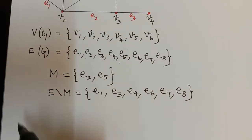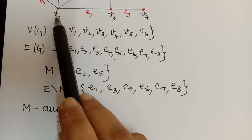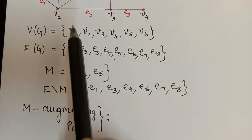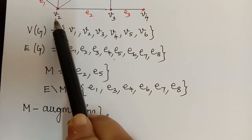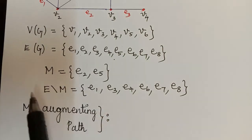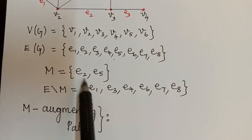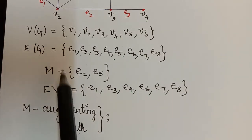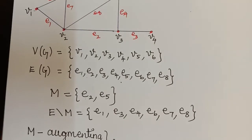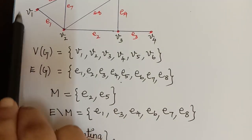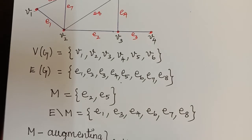Now we will write the M augmenting path. If we start with vertex V2, since E2 is incident with V2, V2 would be matched under M. But by the definition of augmenting path, the origin should not be matched under M. So we can't take V2. Instead, we start from V1, which is not matched under the matching M.